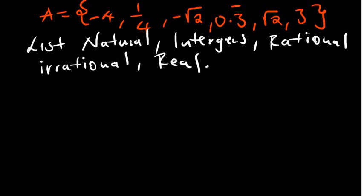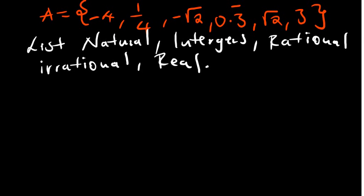Let's talk about this question where you are given a set with members: negative 4, one over four, negative root of 2, 0.3 recurring, root of 2, and 3. They ask you to classify these into natural numbers, integers, rational numbers, and real numbers. To answer that we need to understand what these sets are — what we call sets of numbers.